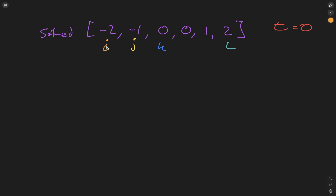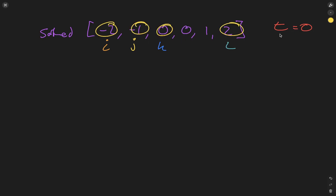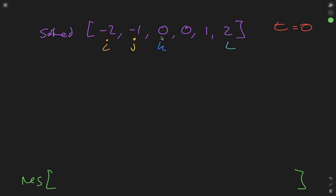We can see that i can only go up to a certain point because j and k will fill those positions, and j can only go so far because k fills that value. So when creating the for loops we know the end points of i and j. All we're going to do is add up these values, see if they equal the target, populate a result array if so, and carry on iterating.